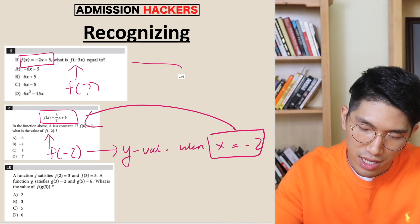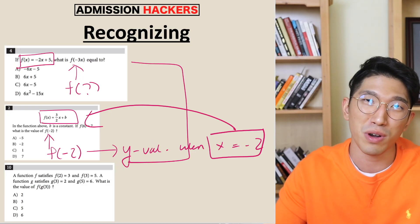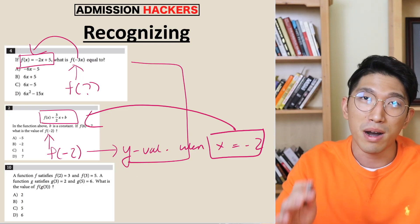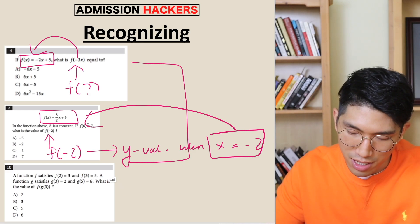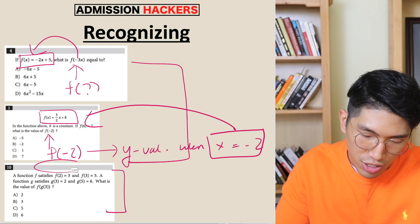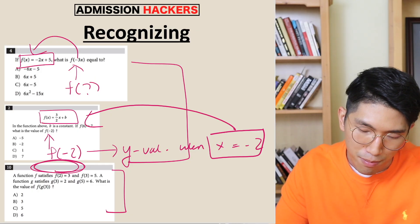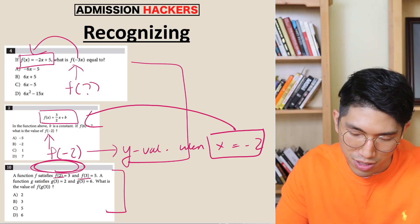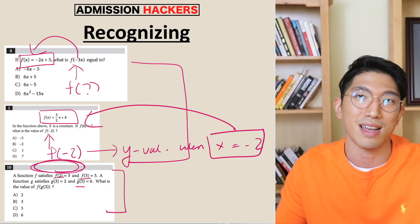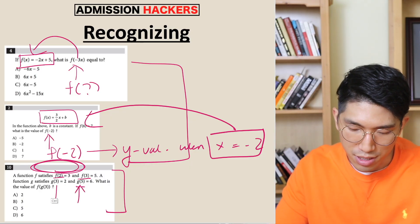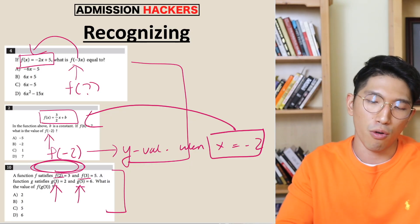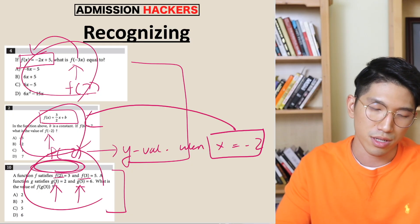These two are actually the easy version of these function questions because all you have to do is just plug it in. But how does the harder question look? It's not going to give you any equation or any function — they're only going to give you function notations: f(3), f(2), g(5), things like that. And you're going to have to know how to interpret these notations in order to answer the question. Now we're going to go over every single one of these questions.